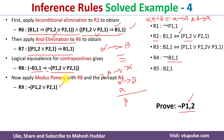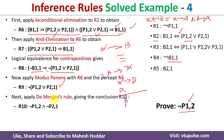The negation is applied to a compound statement, so we take it inside using De Morgan's law. Applying De Morgan's law, negation of (P12 or P21) becomes negation of P12 AND negation of P21.